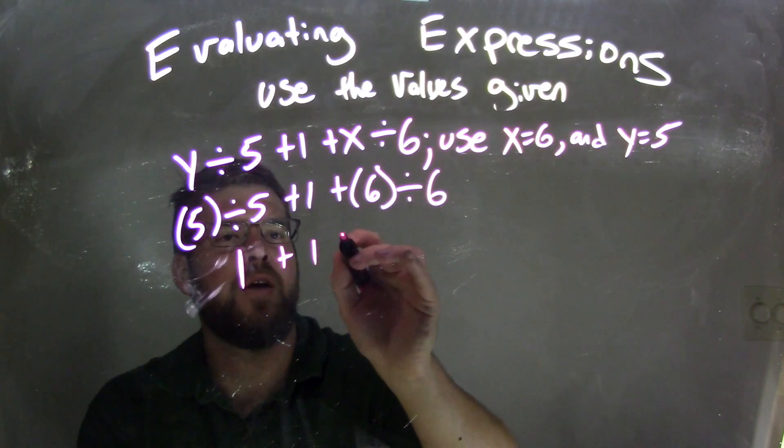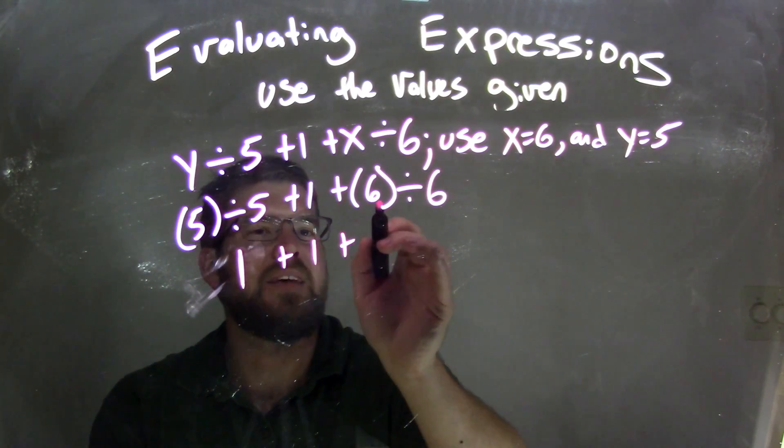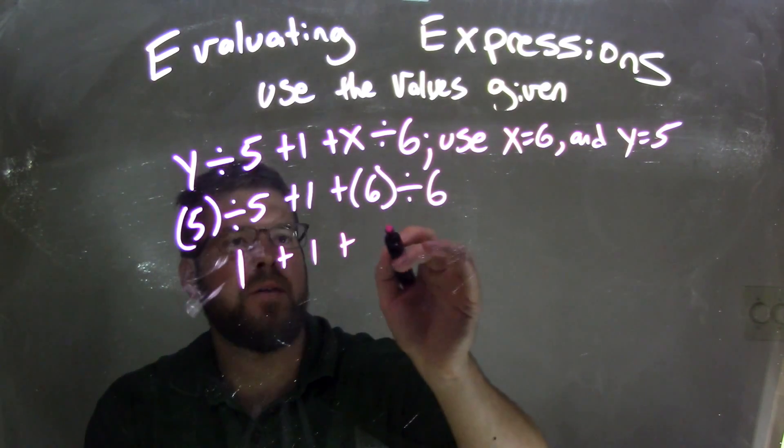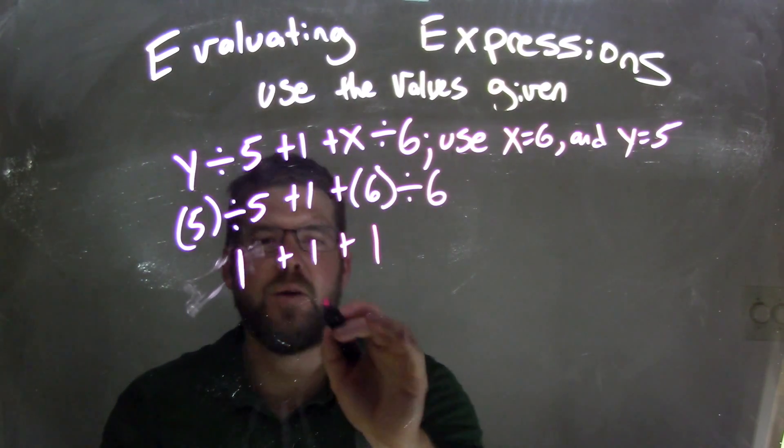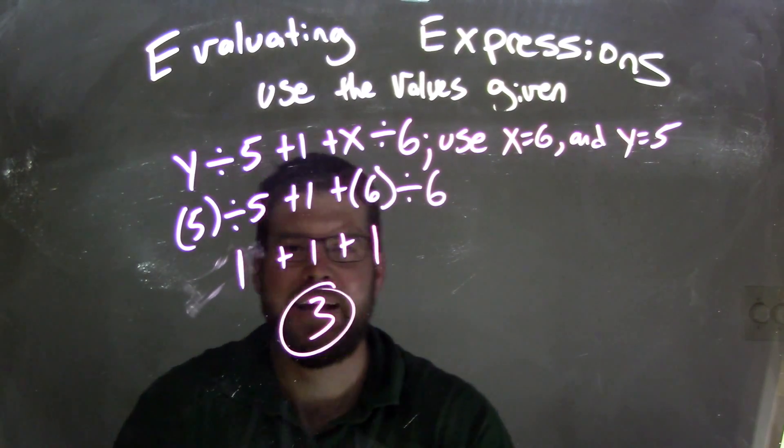Plus, separating here, plus 6 divided by 6, right? That outranks the plus sign, so we have 1 as well. So now we have 1 plus 1 plus 1, which is 3, our final answer.